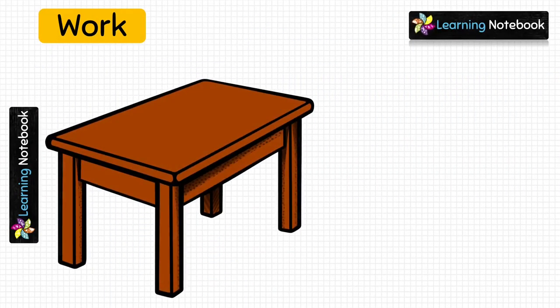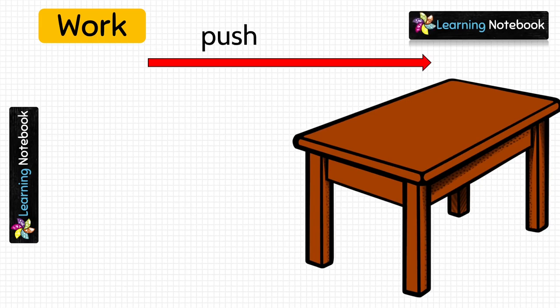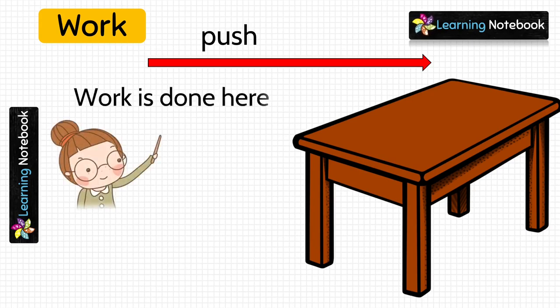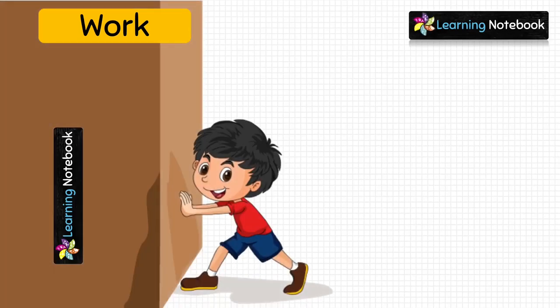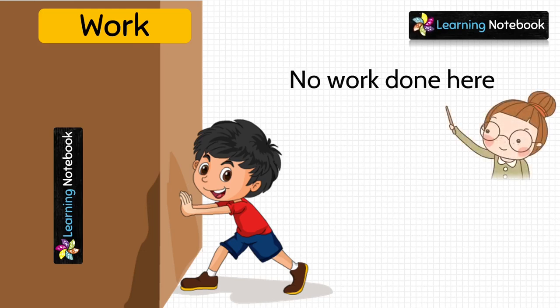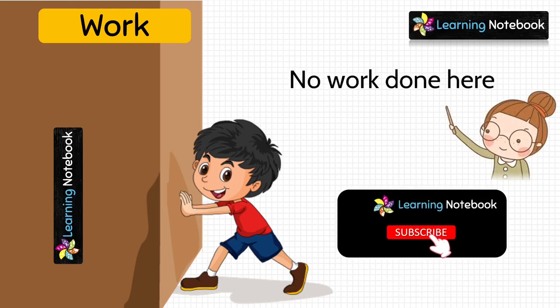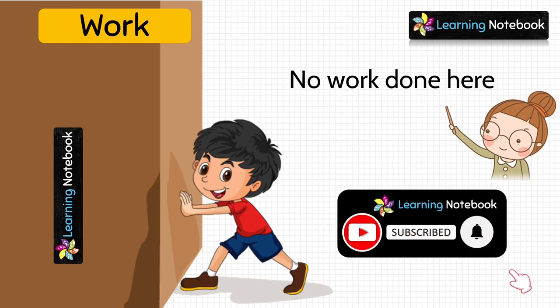Another example: when you move a table, it moves in the direction of the applied force, so work is being done — we are pushing the table and it is being moved in the direction where we are applying the force. However, when we push a wall with all our might, the position of the wall does not change, so we will say no work is done in this case.